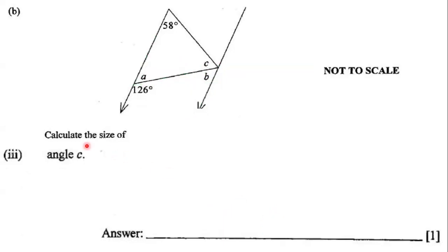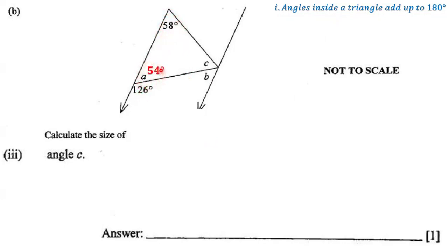Let's move on to the next question. Our goal is to determine the size of angle C. Notice that angles inside a triangle add up to 180 degrees — this useful geometrical rule will assist us. We already know that one angle of the triangle is 58 degrees and angle A measures 54 degrees. C is the angle we're trying to find. To find C, we're going to take the sum of 58 and 54 and subtract that from 180 degrees.